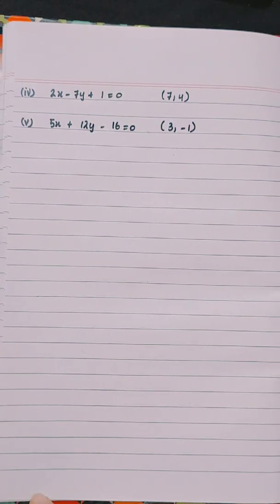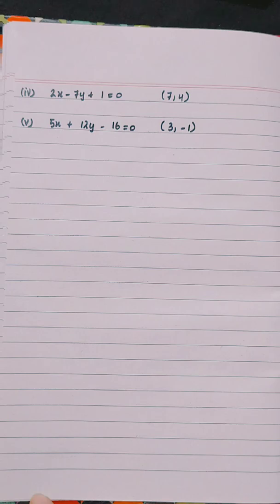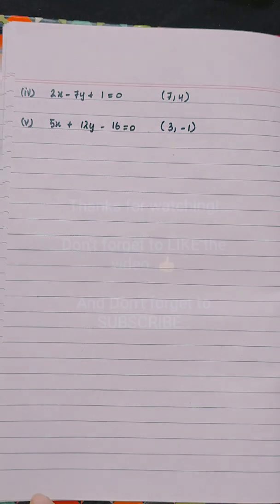Similarly, parts 4 and 5 are solved the same way. Part 4 is: 2x minus 7y plus 1 equals 0 and the point is (7, 4). Part 5 is: 5x plus 12y minus 16 equals 0 and the point is (3, minus 1).